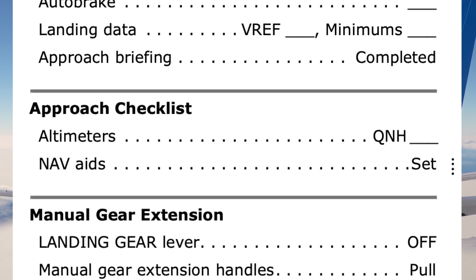Descent checklist complete. Approach checklist: altimeters 2994, nav aids set. Approach checklist complete.